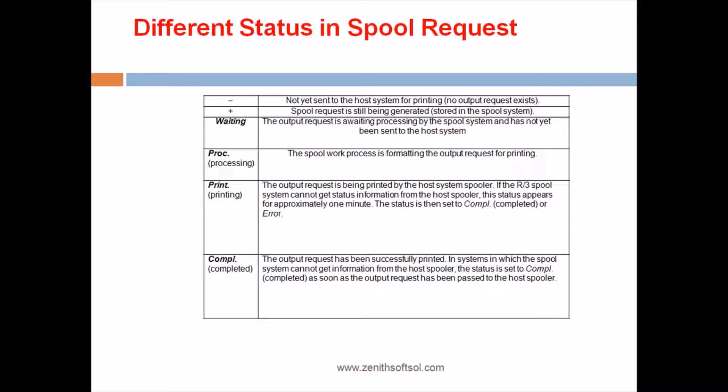So in the proc is nothing but processing. The spool work process is formatting the output request for printing. If there are a lot of pages have been printed, you know we can set for cleaning all the print request. There is a background job, standard background job, usually deletes all, formats all the print request.